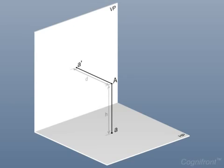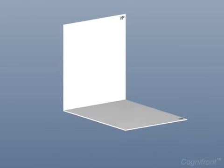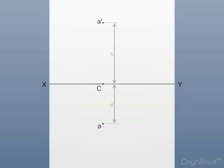So, let's draw this projection onto a paper considering the HP is rotated in the clockwise direction by 90 degrees so that it becomes coplanar with the VP. For this, draw a horizontal reference line XY. Mark a point C anywhere on line XY. From point C, mark a point A dash at a distance of H units above line XY and point A at a distance T units below line XY in line with A dash.